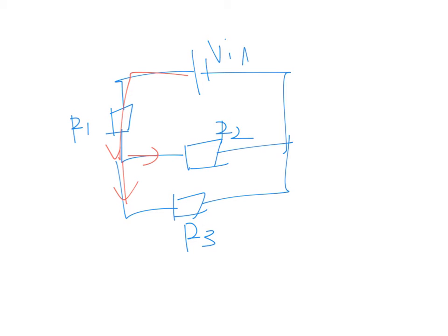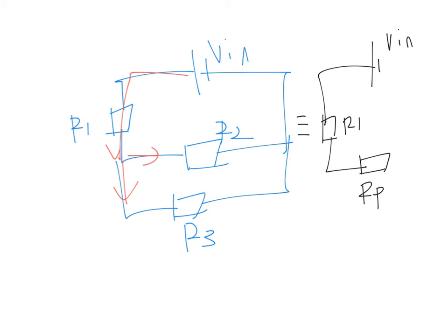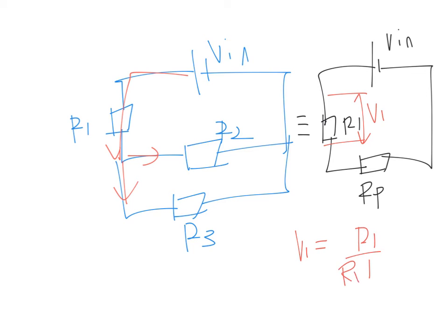But what we could do is modify a little bit. We take R2 and R3 as a parallel combination, because when the current comes it splits and then joins back. So if we redraw this circuit, it will be V in connected to R1 and then the parallel combination Rp. Now the current through R1 is the same as the current into Rp, so we can treat these two as series and use the potential divider formula: V1 equals R1 over R1 plus Rp times V in.